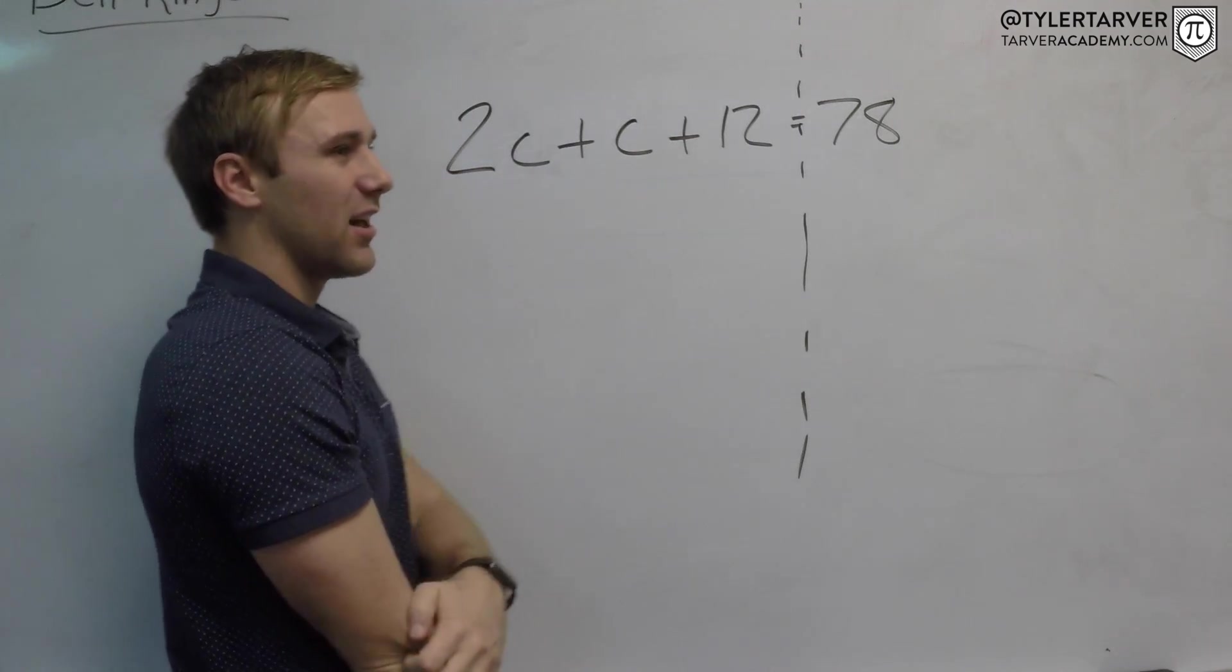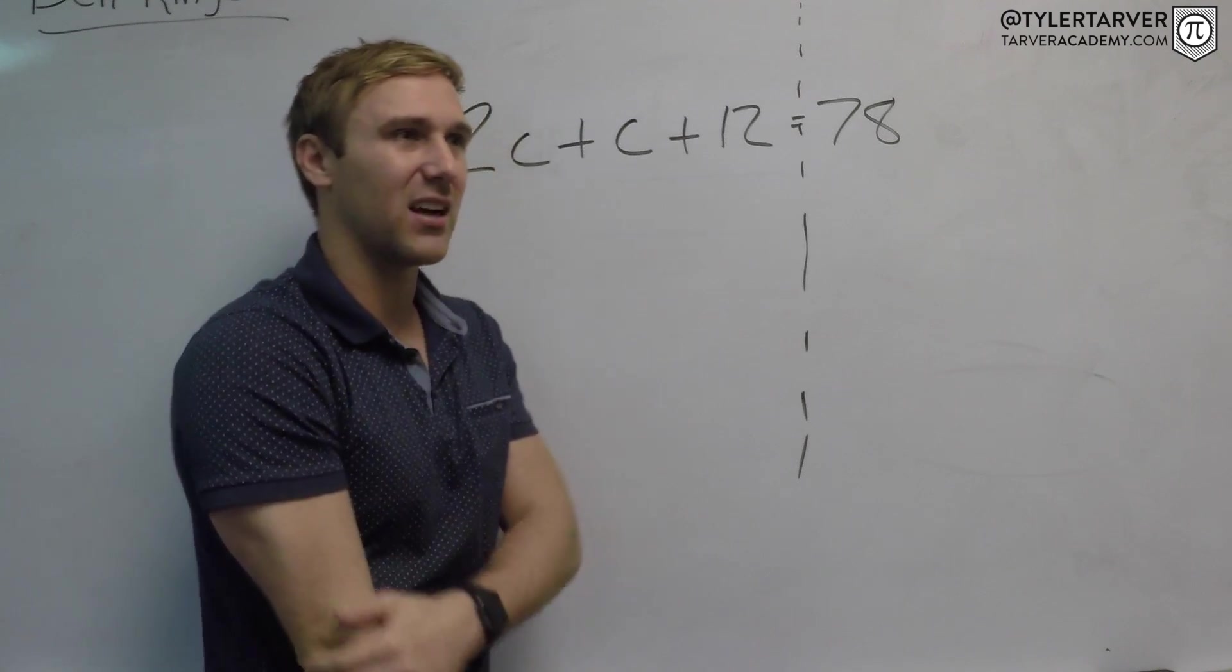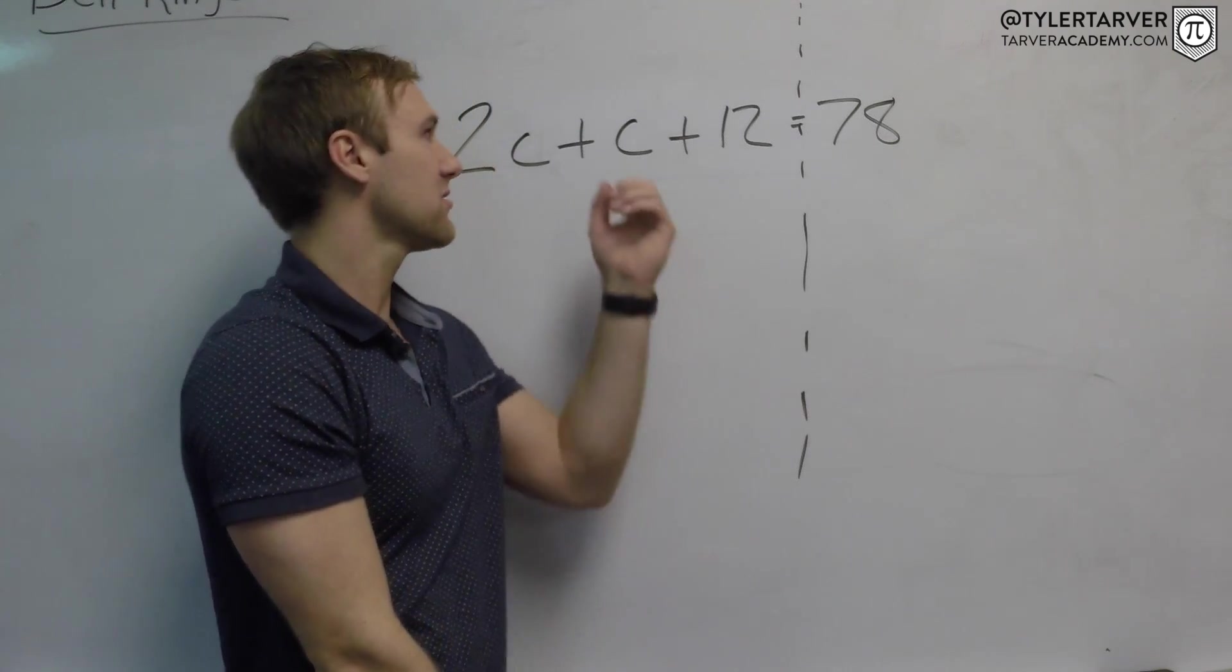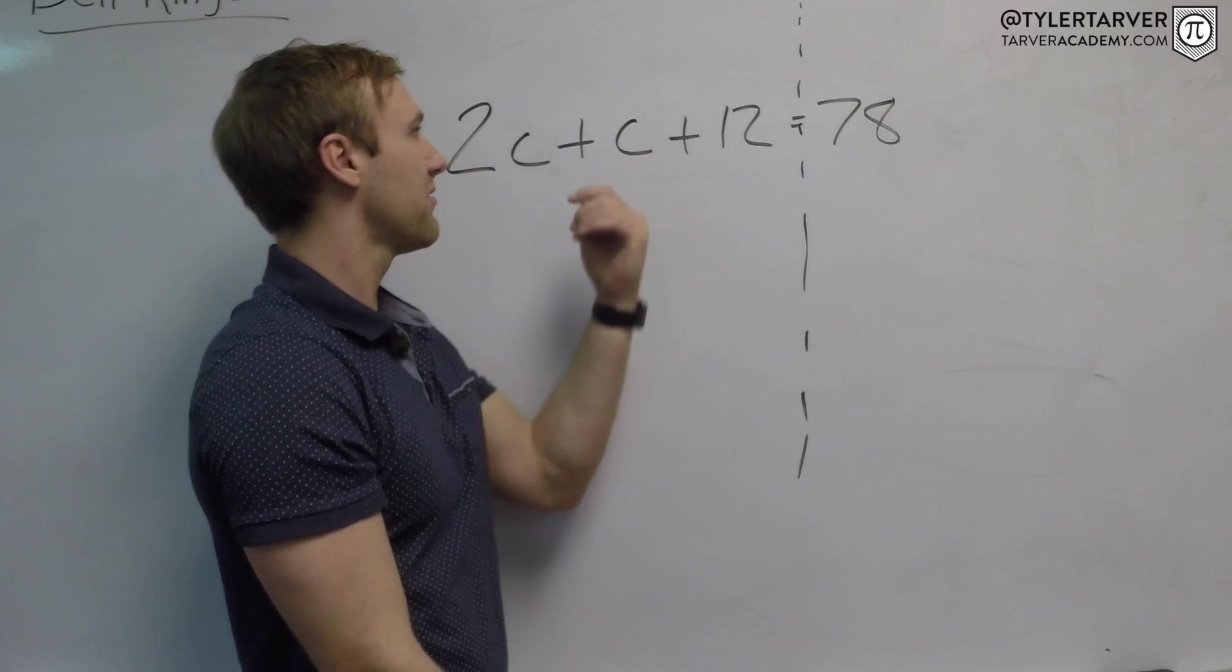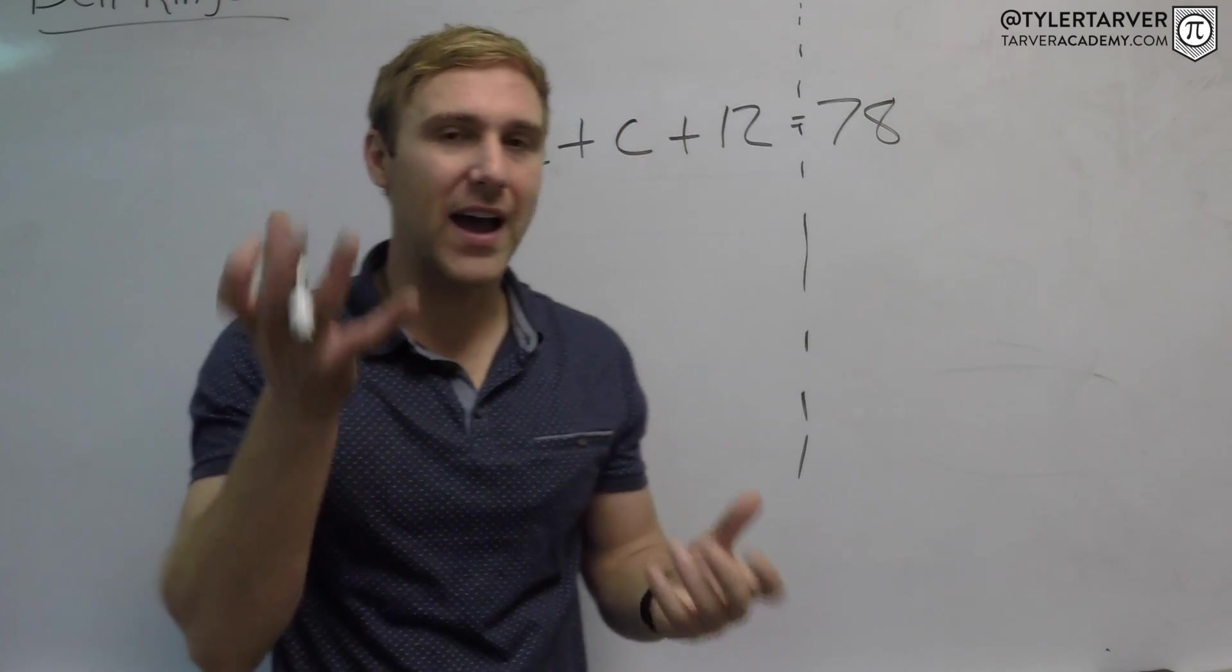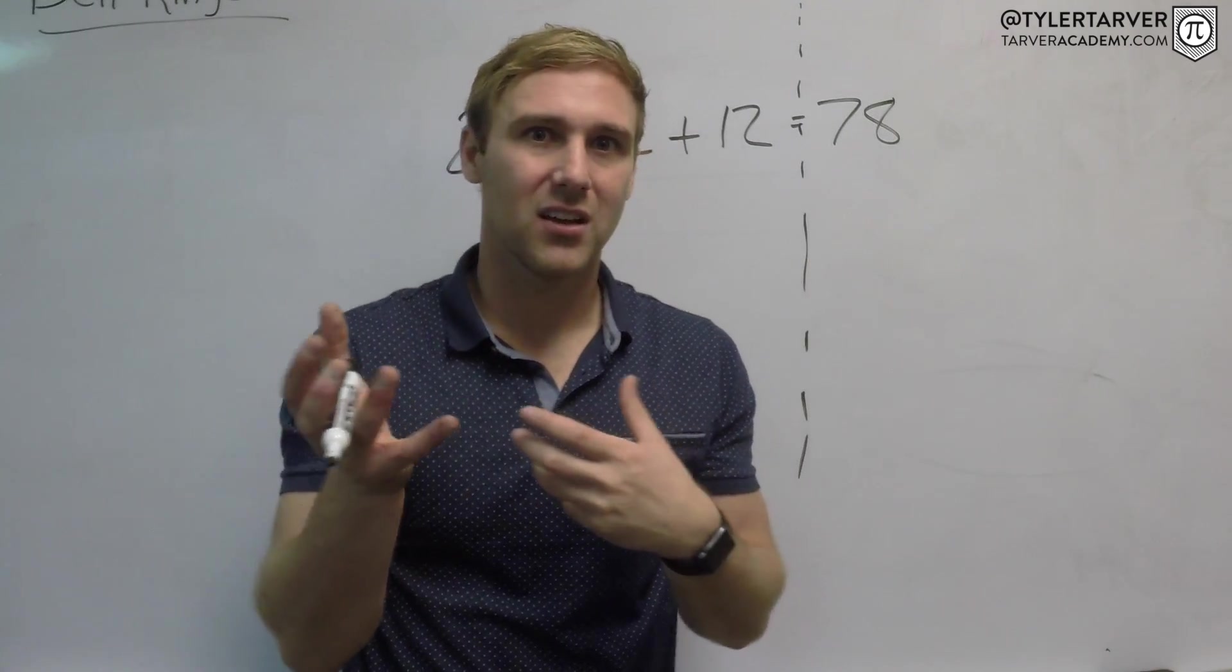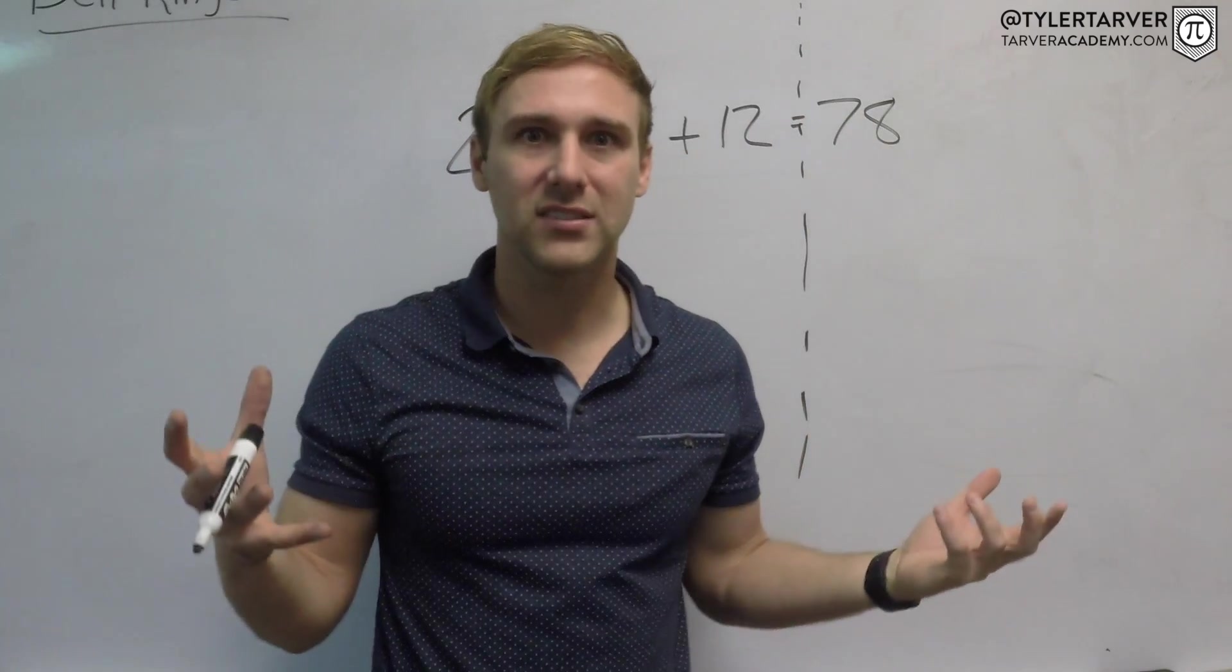So two C plus C, we can add together. A lot of kids when they start out will be like, oh two C plus C, add those together, there's no number in front of it so it's just two C. No. Why would you add something to something else if there was no increase in the quantity?